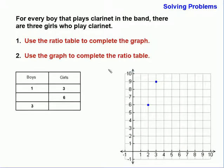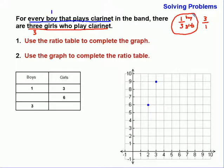Let's see how graphs and charts can work together. For every boy that plays clarinet, let's say every 1 boy that plays clarinet, there are 3 girls who play clarinet. 3 girls who play clarinet for every 1 boy. So we can write that as a ratio as 1 boy to 3 girls, or if we wanted to, 3 girls to 1 boy. So 1 boy to 3 girls is what I'm going to go with here. For every 1 boy, there are 3 girls.